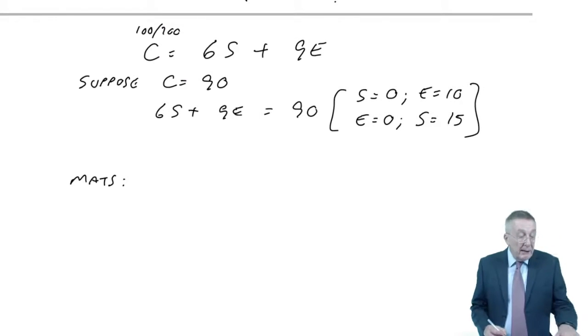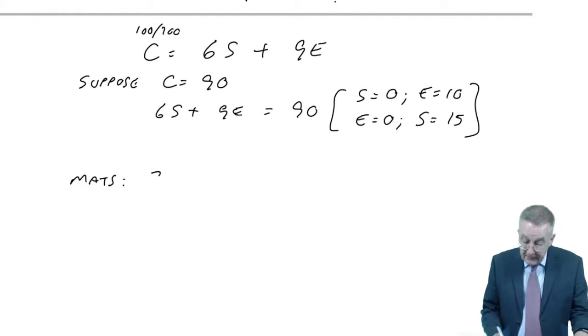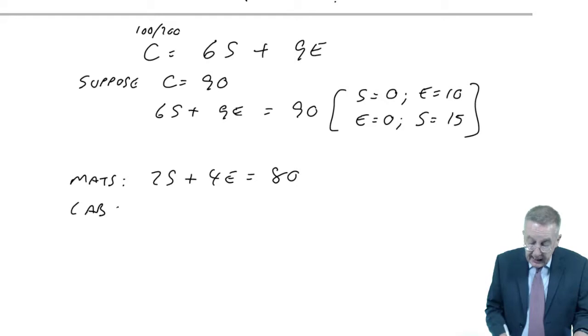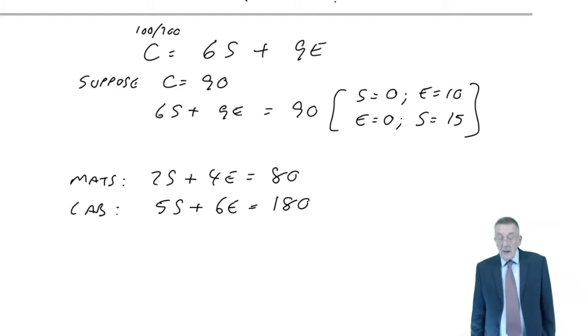What the values are, whichever of those corners it turns out to be. Now point B here is where the labour line crosses the materials line. And of course, two lines only cross at one point.